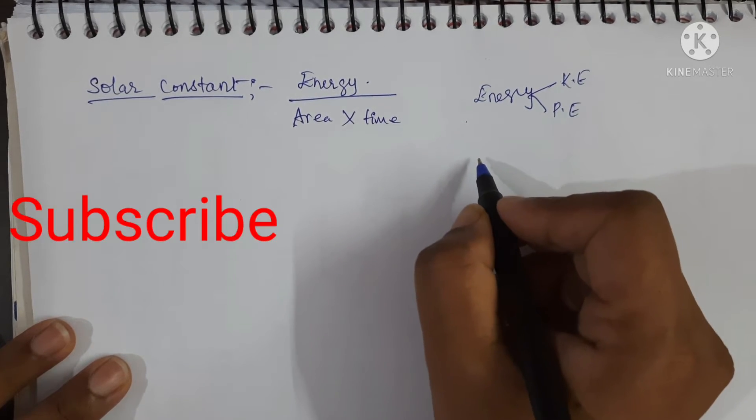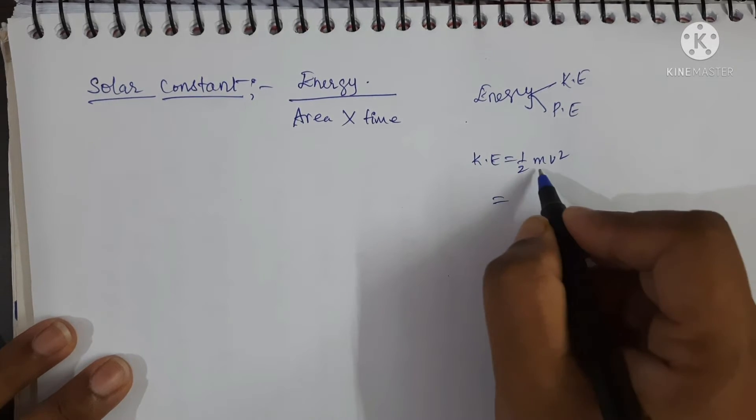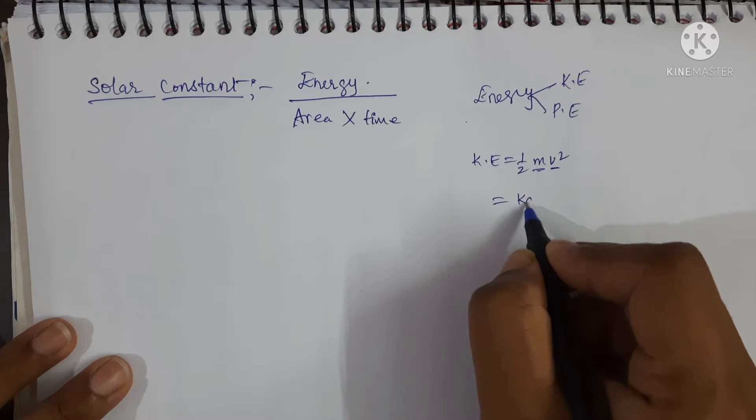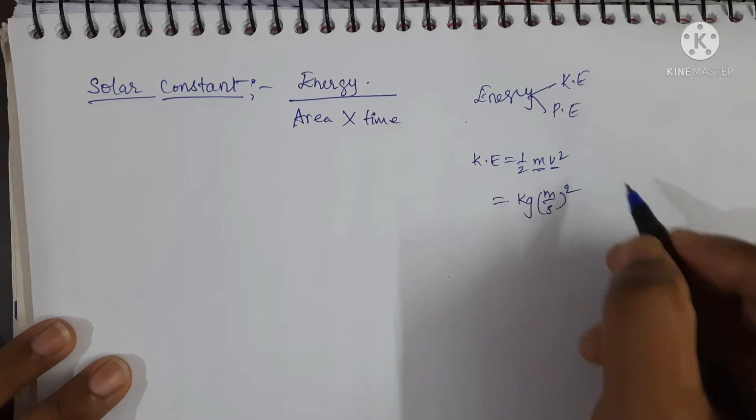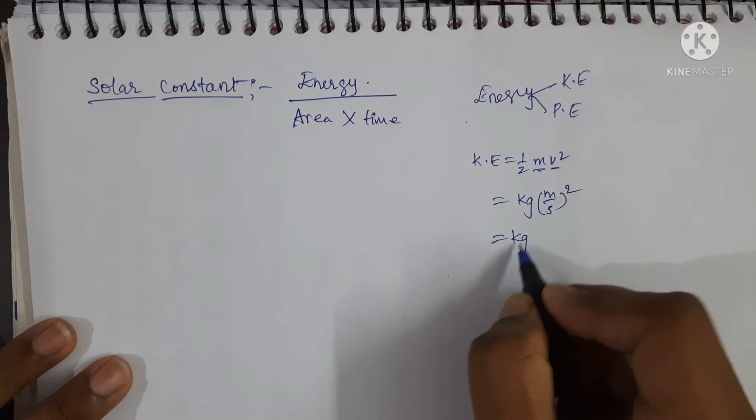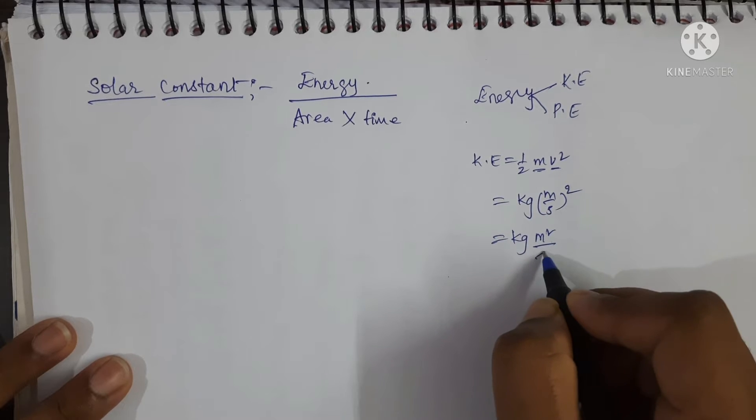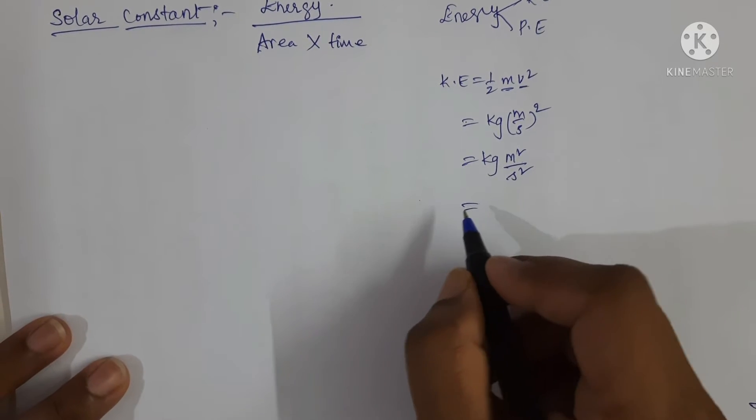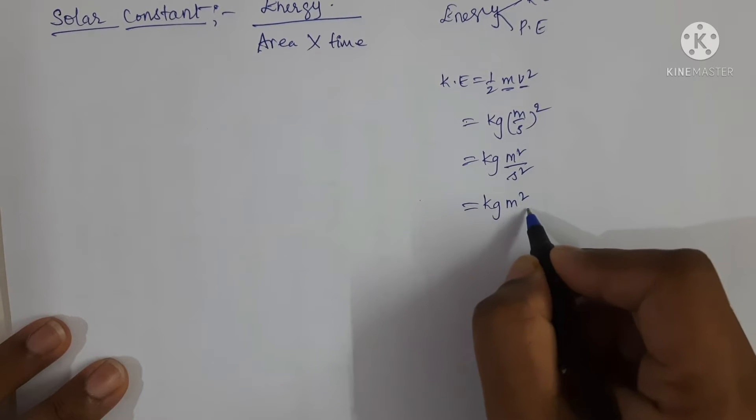I am finding the dimensions for kinetic energy. Half m v square. So write the SI unit for mass and velocity: kg meter per second, and whole square. Separate the square for both terms: meter square and second square, which is equal to kg meter square and